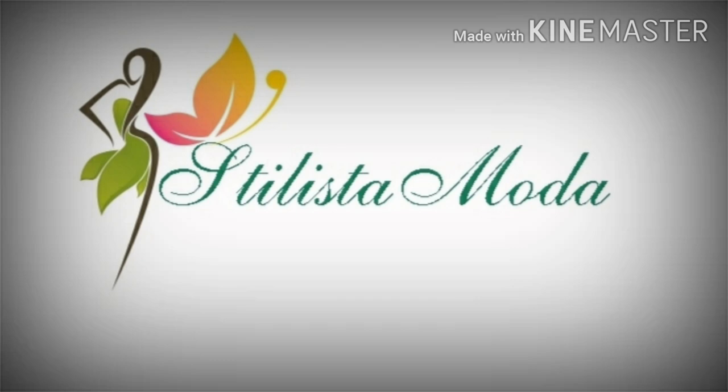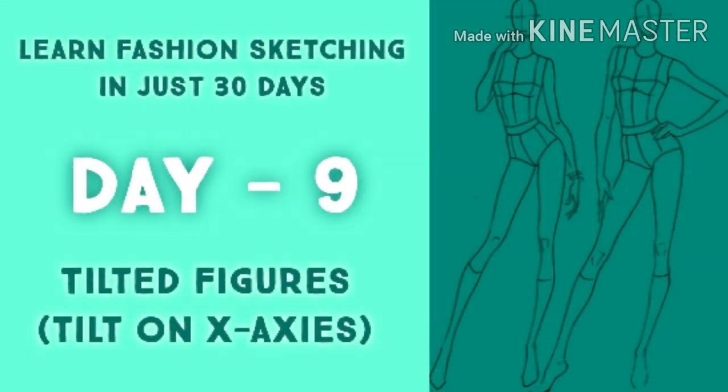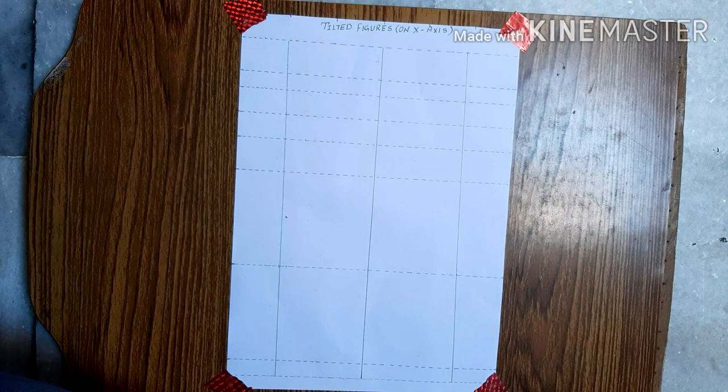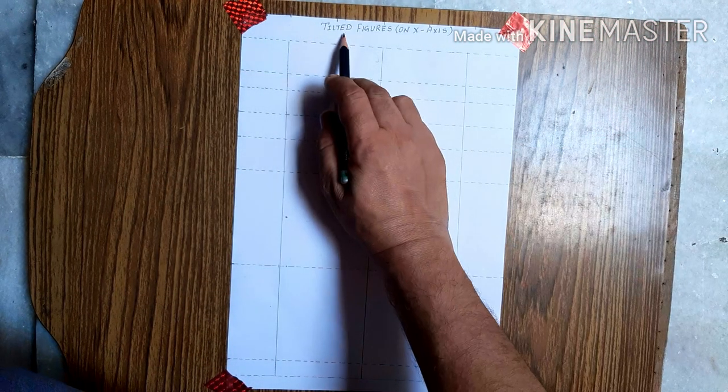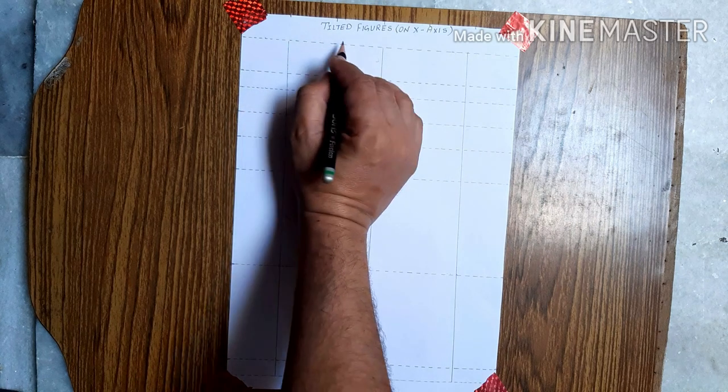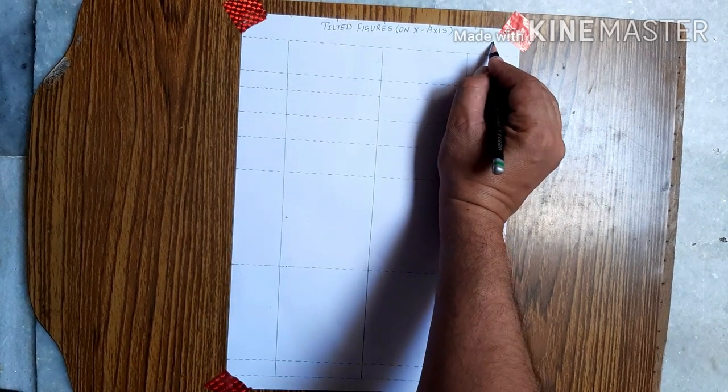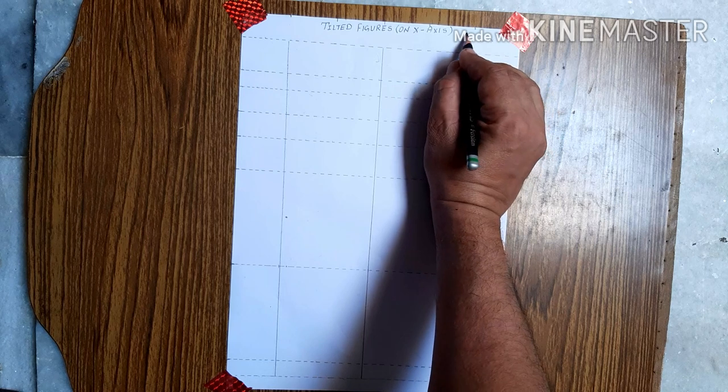Your views and feedbacks. In today's video we'll be learning about the tilted figures. A figure can be tilted on two axes, that is x-axis and y-axis.